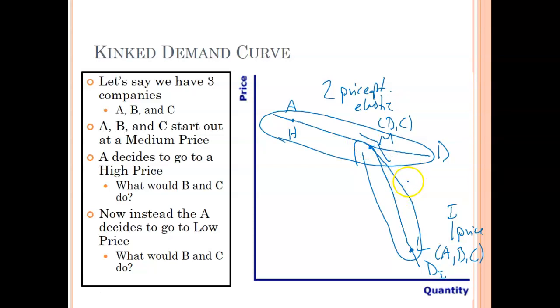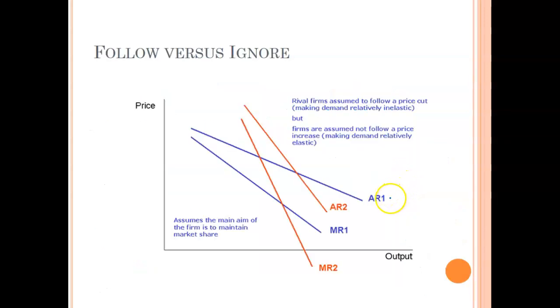So what we can see is if A decided to price high, we have this more elastic demand curve. And if A decides to price low, we have this more inelastic demand curve. And right here you see the kink. That's what's called a kinked demand curve. Now, if we fill in with the marginal revenue curves, this is what we see. Again, right here is going to be kind of our starting medium point. Up here is the person A's high price. I'm just going to put an H up there. And then down here, this AR2 is going to be the low price point.